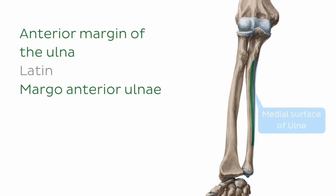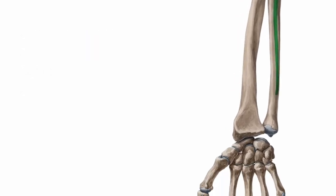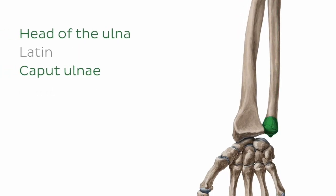Continuing to the distal end of the bone, where we can see that the ulna has a somewhat rounded form, this is known as the head of the ulna.